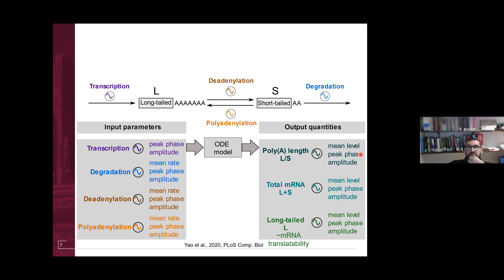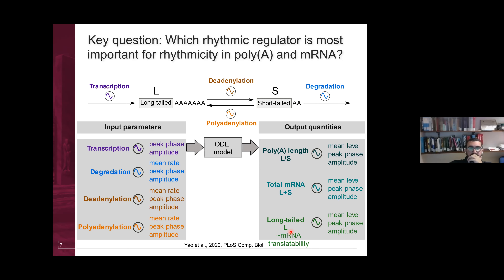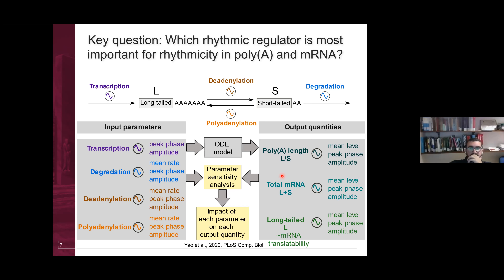We plug in the mean rate, peak phase, and relative amplitude of the four processes to predict the mean level, peak phase, and relative amplitude of L and S. Quantities of interest are: L/S ratio (quantifies poly-A tail length), L+S (total mRNA abundance), and L (long-tailed mRNA abundance, a rough quantifier for mRNA translatability). Since parameters are likely gene-specific, we perform global parameter sensitivity analysis over a global parameter space using Sobol indices, which tell us how each output quantity depends on each input parameter.